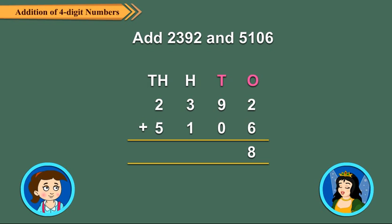Add the tens, 9 plus 0 is equal to 9. Add the hundreds, 3 plus 1 is equal to 4. Finally, add the thousands, 2 plus 5 is equal to 7.